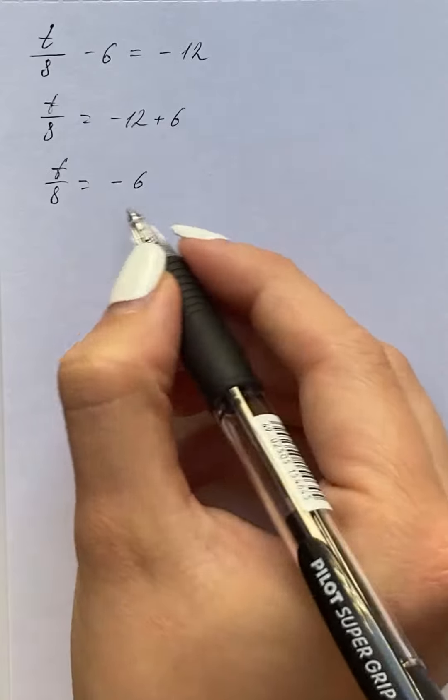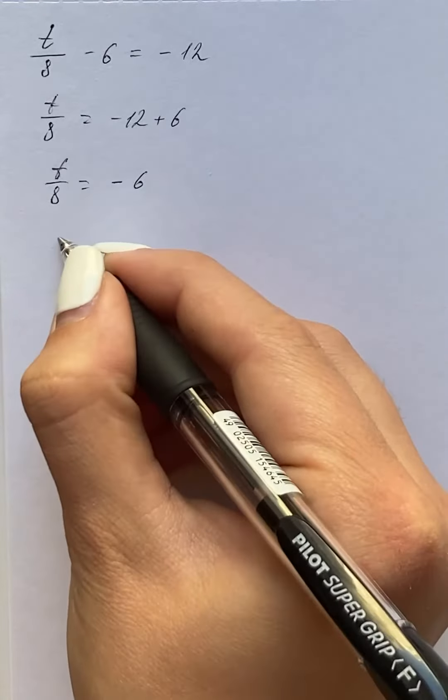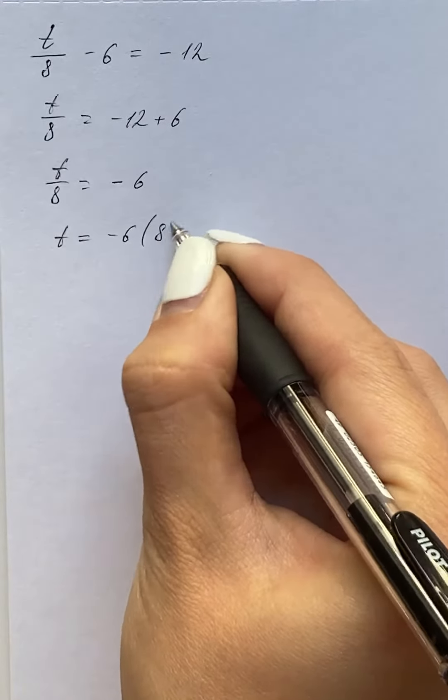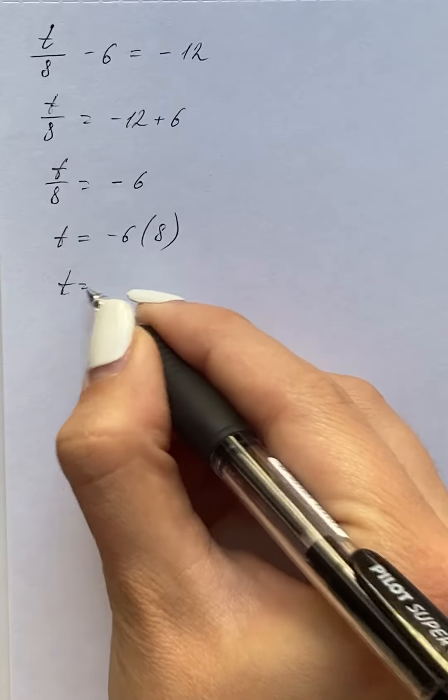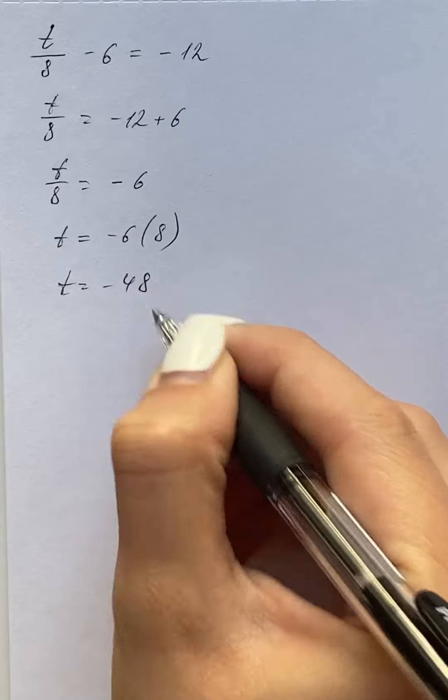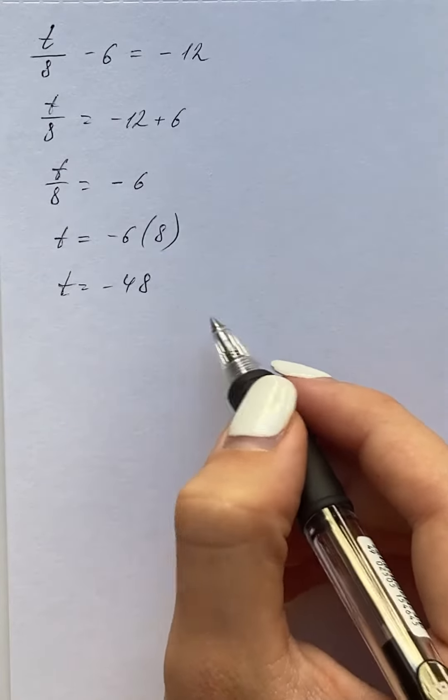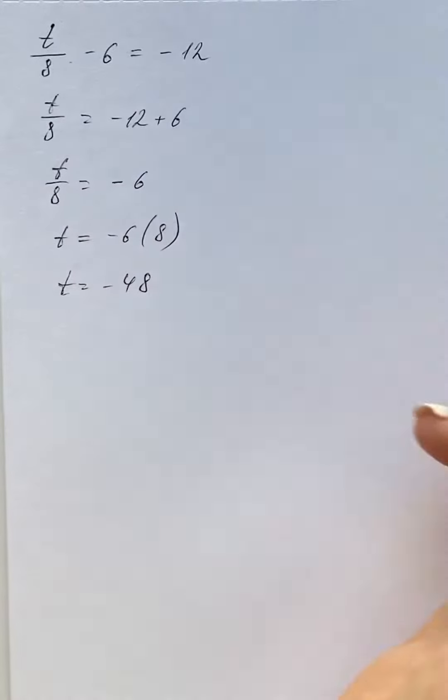And we're going to multiply both sides of the equation by 8, so we get t equals negative 6 times 8, so t equals negative 48. And now we put t equals negative 48 in the given equation to check.